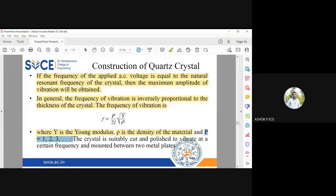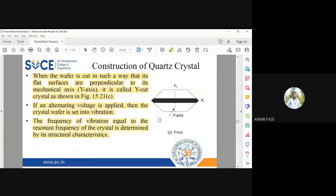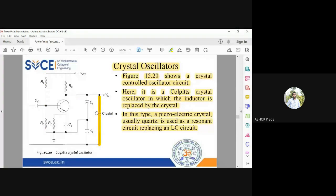The constant varies from one, two, three. The crystal is suitably cut and polished to vibrate at a certain frequency between the two metal plates. You can see in the very first diagram, in between two metal plates you have the crystal. So this is the notation of a crystal oscillator.